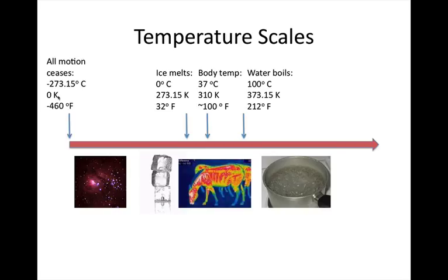Zero degrees Kelvin is equal to minus 273.15 degrees C. So to convert between Kelvins and degrees C, we have to either add or subtract the 273.15.